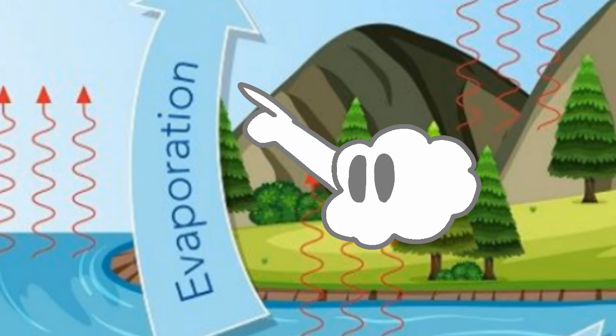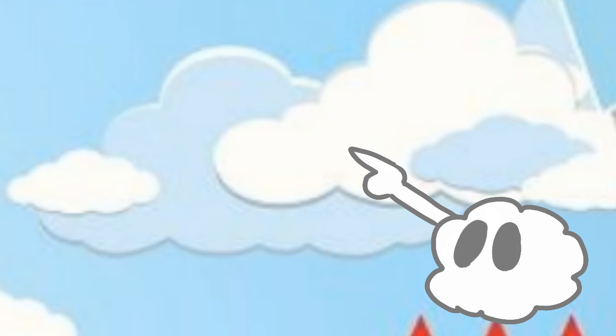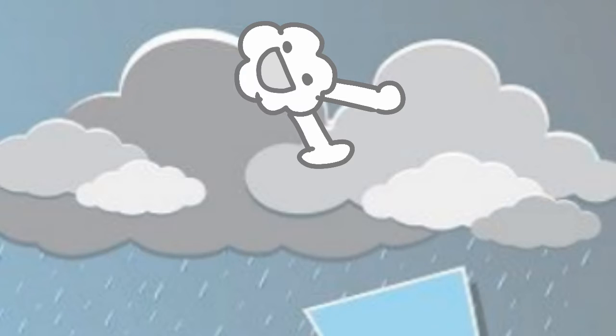Basically, the water cycle is when water evaporates into a cloud, turns into condensation, moves somewhere, and then starts to precipitate, which means it rains.